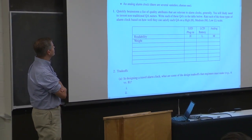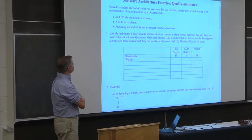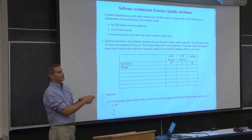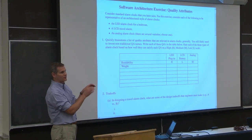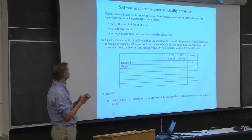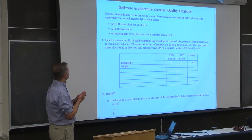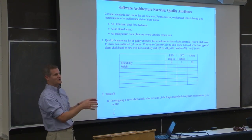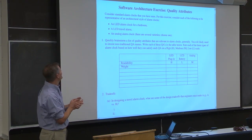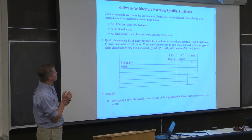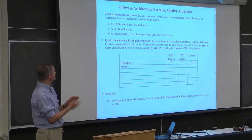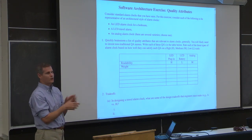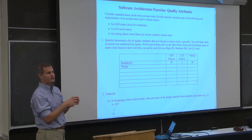Let's consider three concrete types of alarm clocks. There's a little LED alarm clock for a bedroom — by LED I'm talking about the red letters that you have in your house. The LCD travel alarm is the one that's like a calculator, and an analog alarm clock like the Mickey Mouse wind-up that rings the bells at the top.